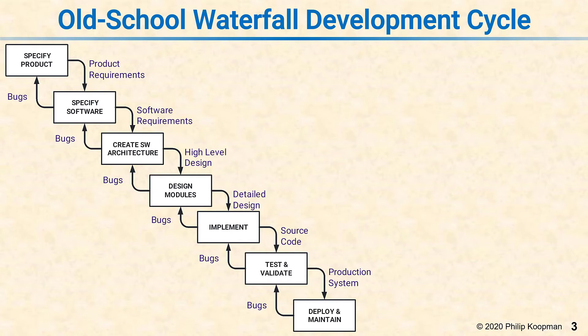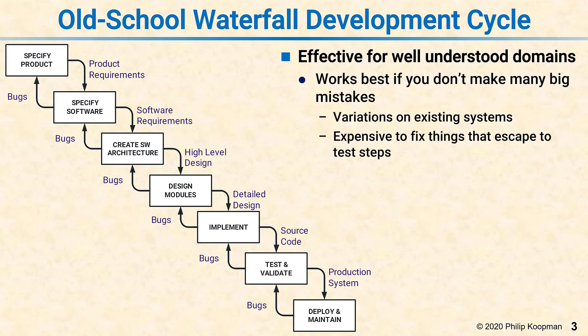Implementing — that's the part where you actually write the code — and then taking the source code and doing testing and validation, and finally deploying and maintaining. The waterfall process is effective for well-understood domains.